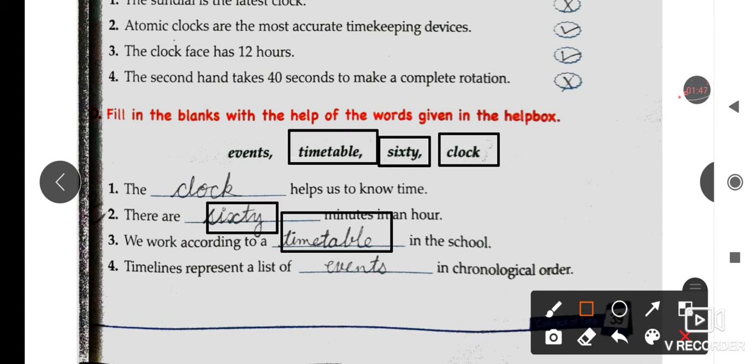Number 4: Timelines represent a list of events in chronological order.